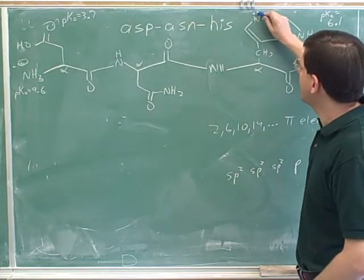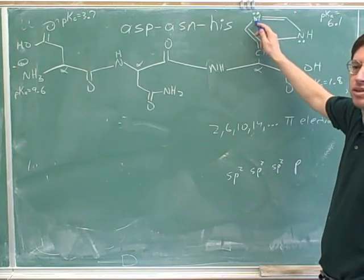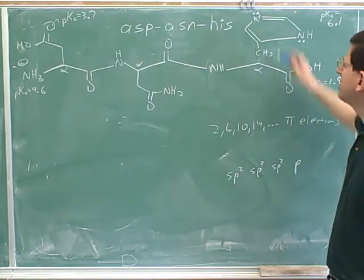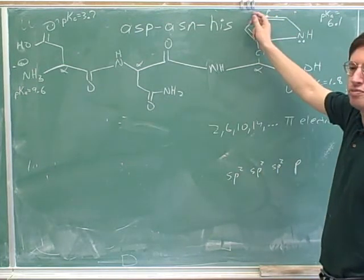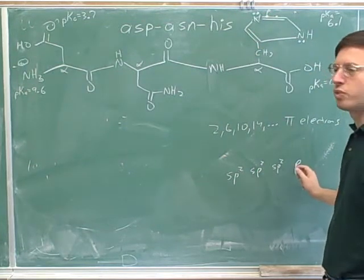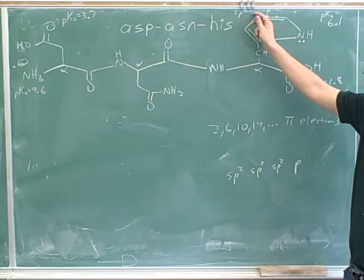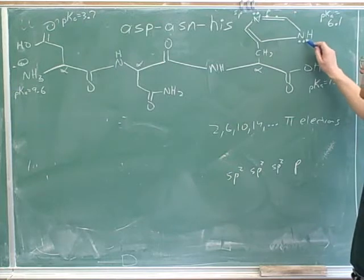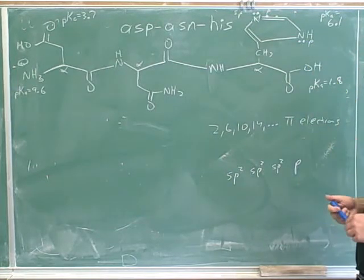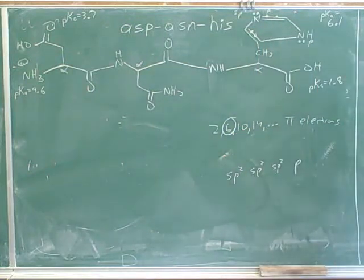Now this nitrogen has a lone pair that you might think is going to be basic, and this nitrogen also has a lone pair. What is this nitrogen doing with its one p orbital? This one is making a pi bond, so it must be using its p orbital for the pi bond. Therefore its lone pair must be in an sp2 orbital — not a p orbital — so these are not pi electrons. How about this nitrogen? It can put its lone pair in a p orbital because it doesn't have to make a pi bond. So how many pi electrons do we have total in the whole ring? Six: two in this pi bond, two in this pi bond, and two in this p orbital. So this ring is aromatic.